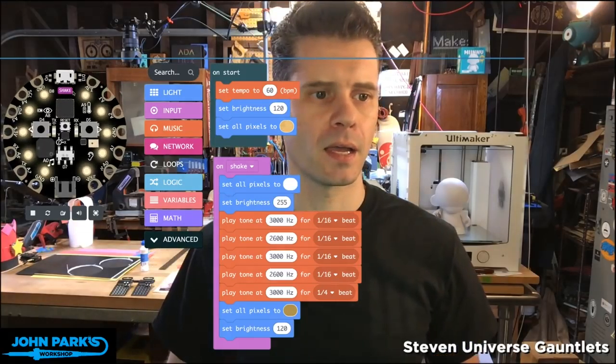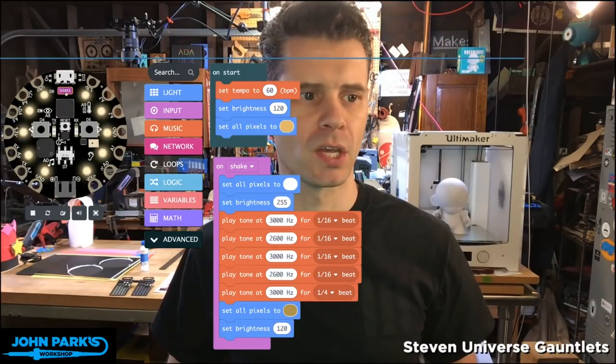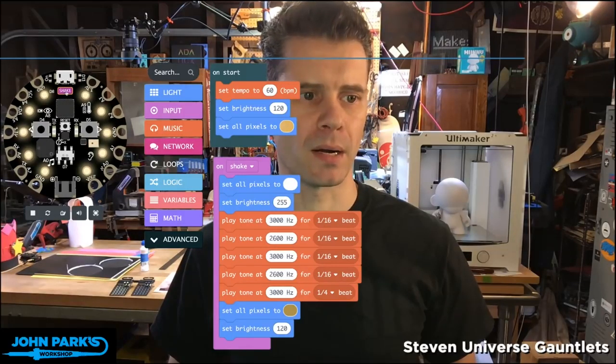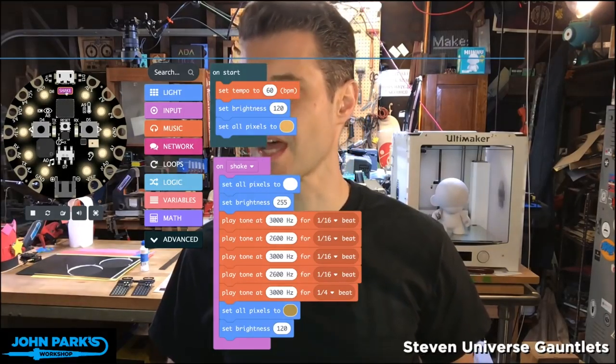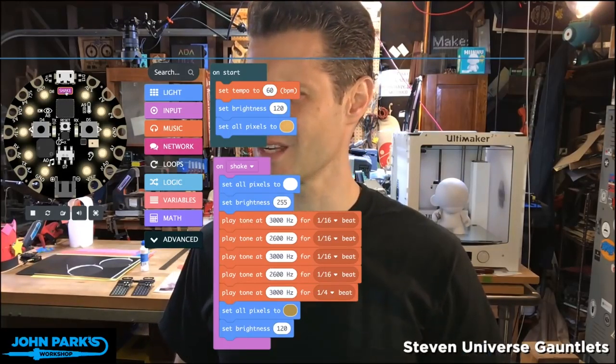Now you can see over here in the simulator, if I add an on shake block, I actually get this shake button. Thank you, it's 9.8 meters per second squared, not feet. It's 32 per feet, something like that.